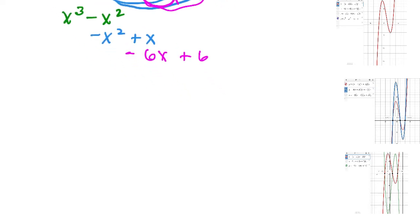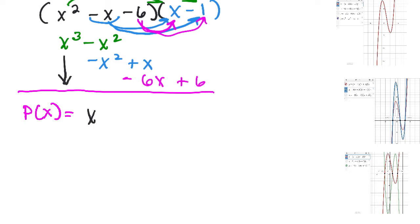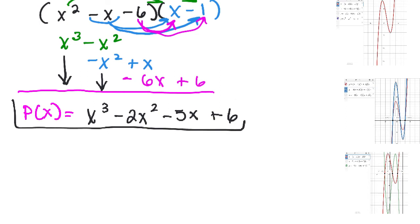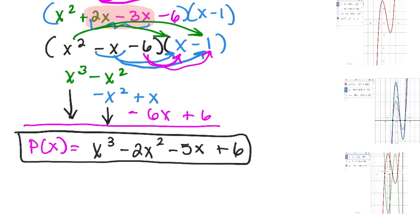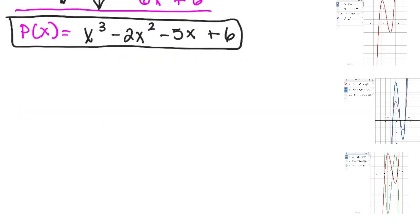Combining all like terms gives us p(x) equals x cubed minus 2x squared minus 5x plus 6. That's the polynomial with solutions 3, negative 2, and 1.